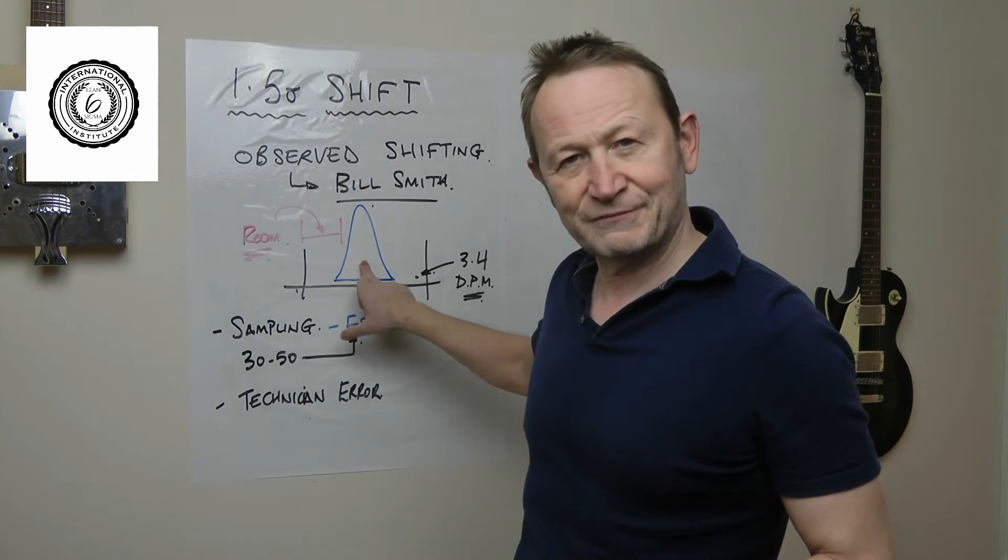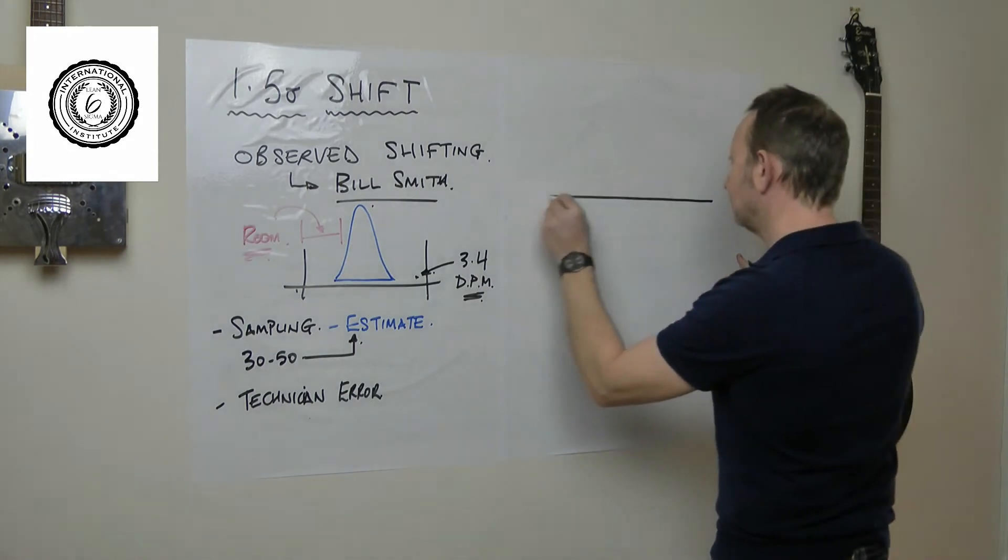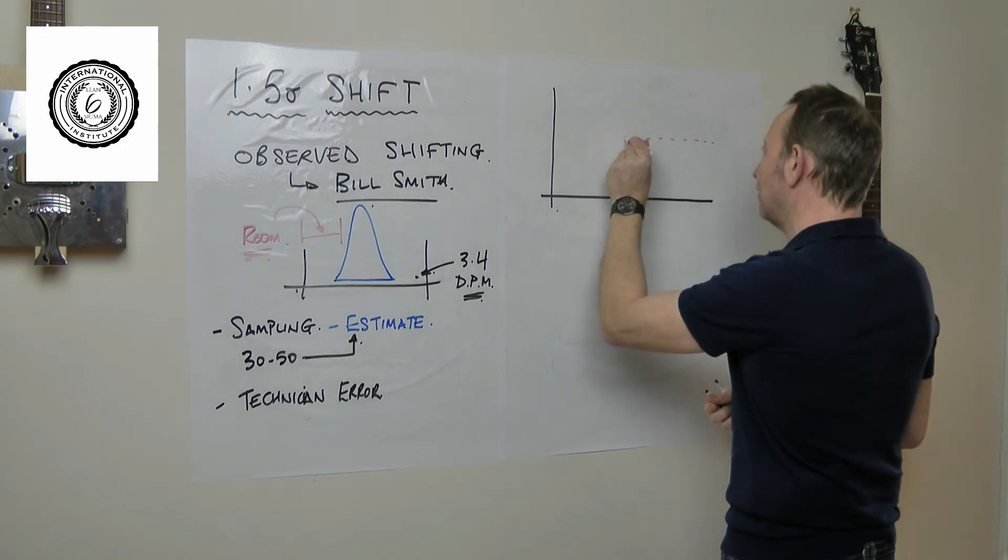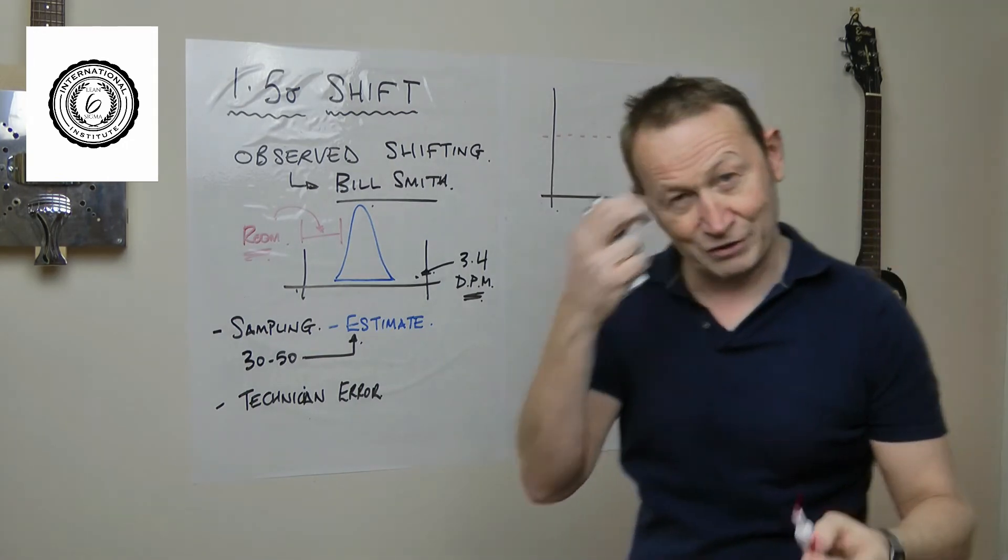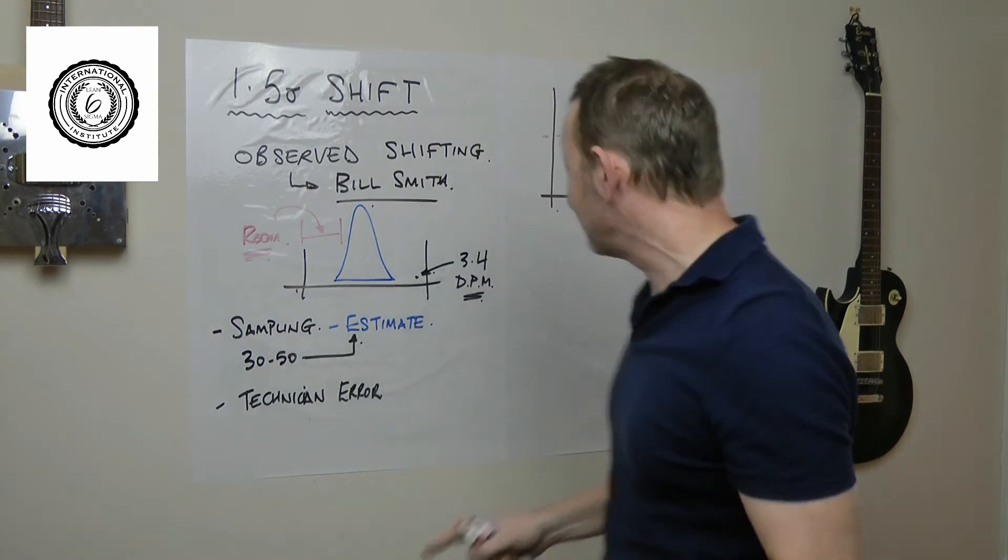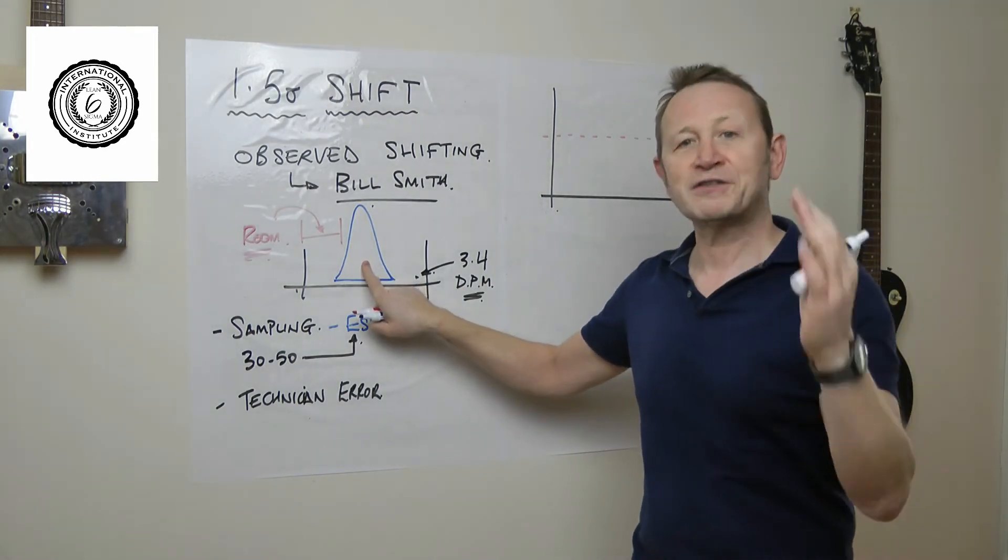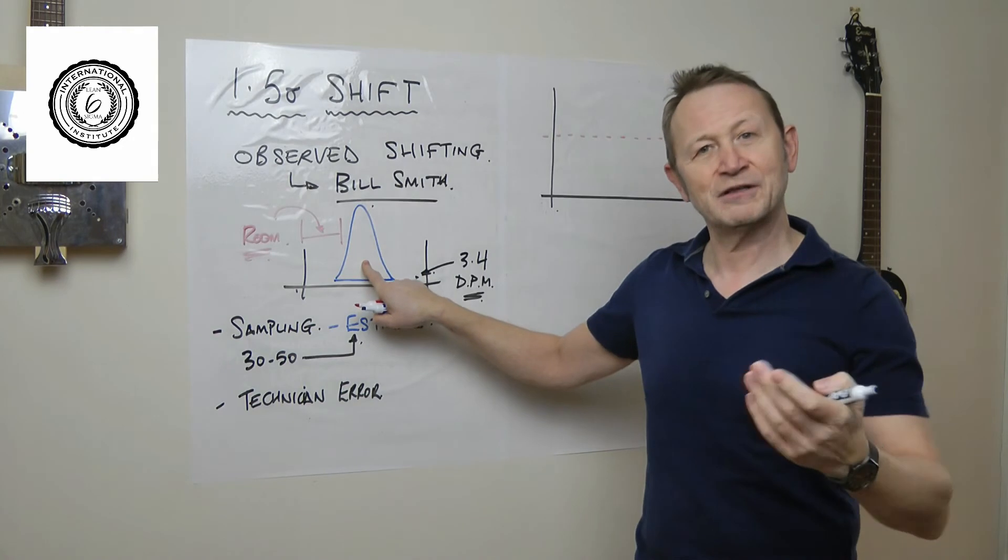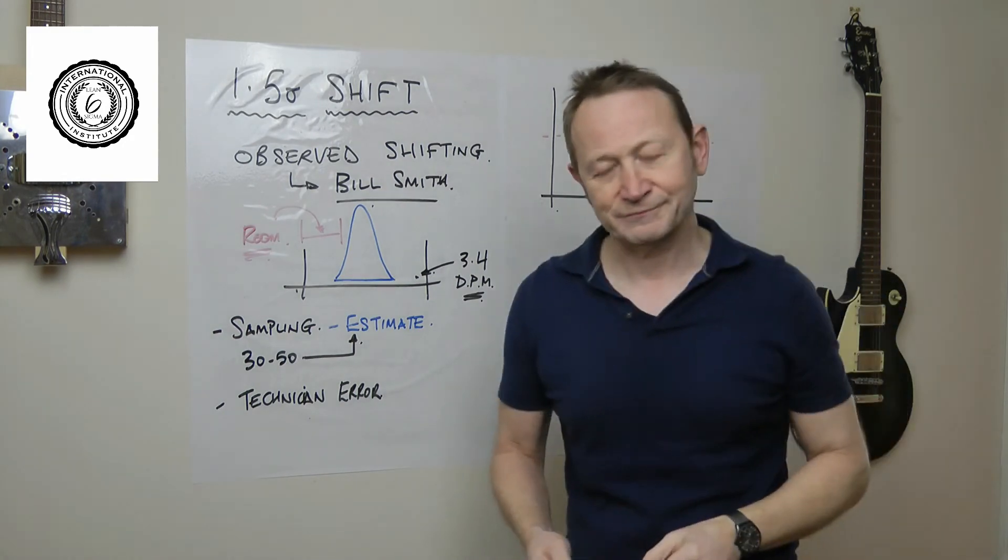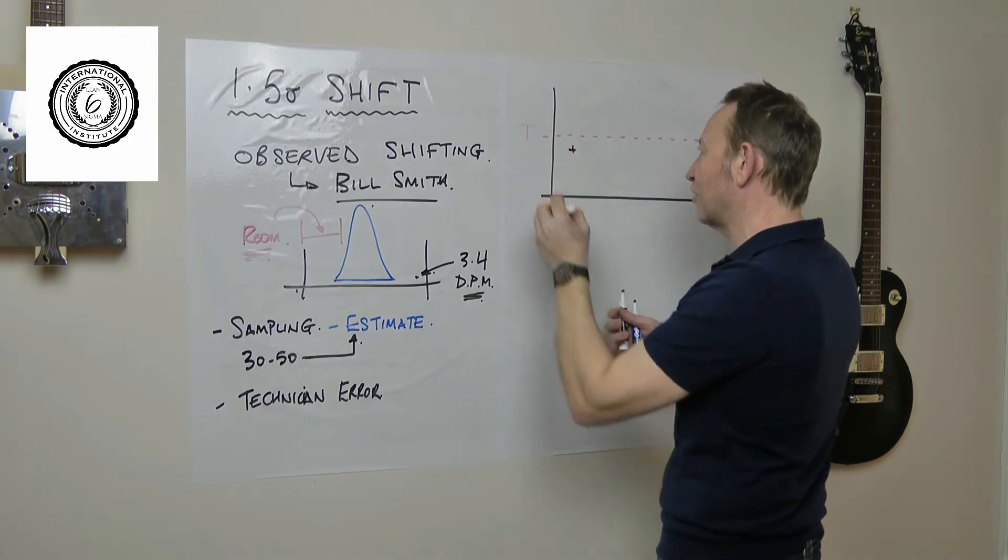Here's how the technician has to deal with this problem: he can't see this picture. What does a technician see? Well, what the technician sees, and this assumes by the way that he draws a graph, and by the way most technicians don't draw a graph. If they drew a graph they'd get an awful lot more information about the process. But let's assume that they do.